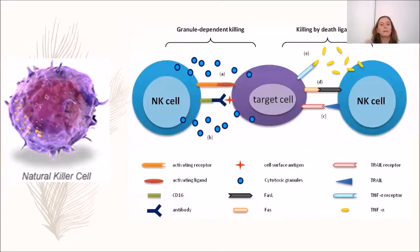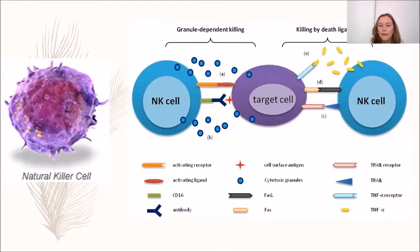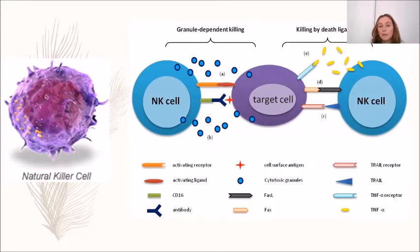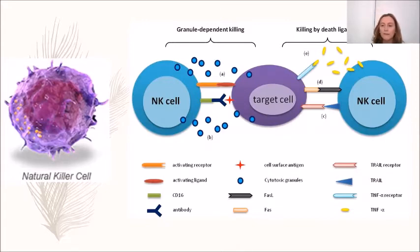Another important cell in innate immunity is the natural killer cell. NK cells are very important in immune surveillance because they are always looking for abnormal self antigens, and when they recognize these antigens they can kill target cells by means of perforin or by cell-to-cell contact via the Fas/FasL pathway.